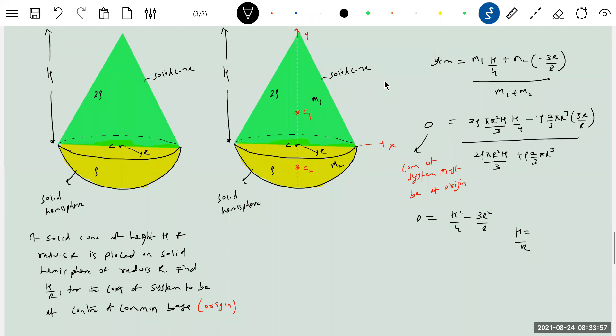If the ratio of H by R is equal to 3 by 2, if the ratio of H by R is that much, the center of mass of system will lie at the common base.